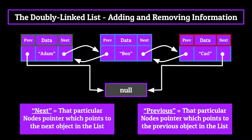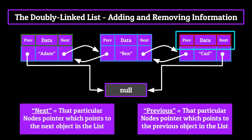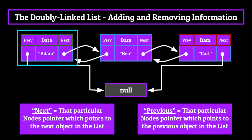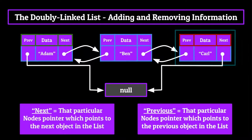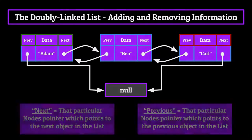Finally, just like last episode, the green on top of a node signifies that it's the head node, and the red signifies that it's the tail node. We can add and remove nodes from the head, the middle, or the tail of the list, and we're going to be covering all six today, starting with adding a node to the head of a doubly linked list.